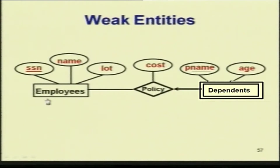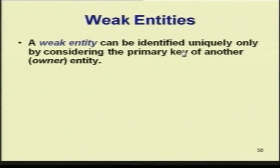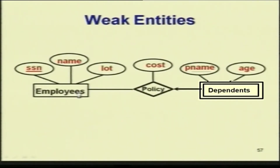Looking at an example: you have employees and you have dependents. The employees entity has SSN as the primary key, along with name and other attributes. The dependents entity has p_name and age. Here p_name is the discriminator. A weak entity can be identified uniquely only by considering the primary key of another owner entity — the dependent depends upon the employee and otherwise has no independent existence.